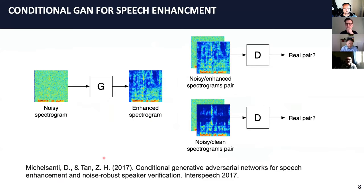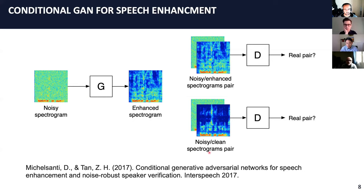For example, we can apply GAN as a learned objective function. This is work we did in 2017 — we were one of the first labs to apply GAN to speech signals. In GAN there are two networks: the generator and the discriminator. It's a conditional GAN — we condition on the noisy spectrogram and the generator produces the enhanced spectrogram. The discriminator aims to distinguish between the enhanced spectrogram and the clean spectrogram. With the interplay between generator and discriminator, we can train an enhancement system that can denoise speech.